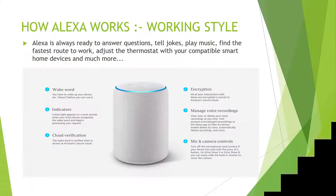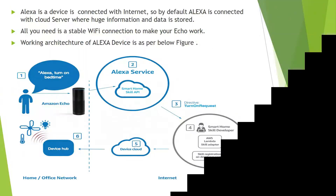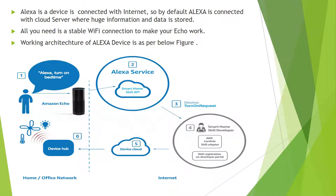How Alexa Works: Alexa is always ready to answer questions, tell jokes, play music, find the fastest route to work, adjust the thermostat with compatible smart home devices, and much more. Alexa's device is connected with the internet, and by default Alexa is connected with a cloud server where huge amounts of information and data are stored. All you need is a stable WiFi connection to make your Echo work. The working architecture of the Alexa device is shown in the figure below.